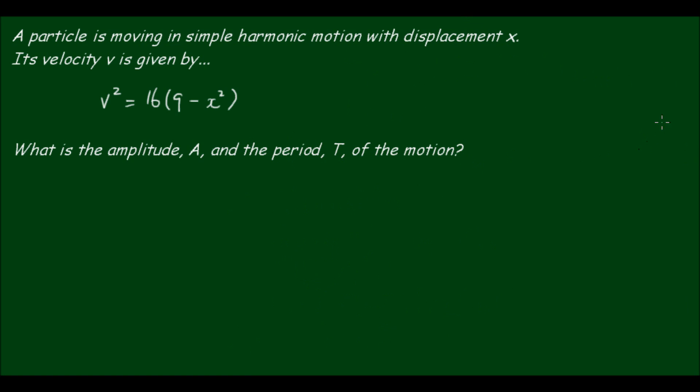So let's do an example. A particle is moving in simple harmonic motion with displacement x. Its velocity V is given by V squared is equal to 16 outside of 9 minus x squared. What is the amplitude A and the period T of the motion?